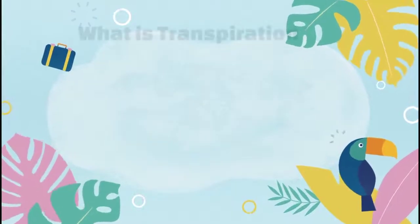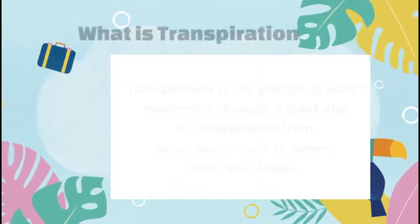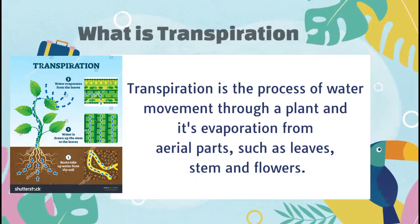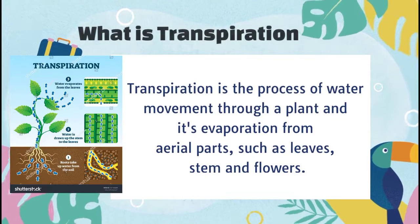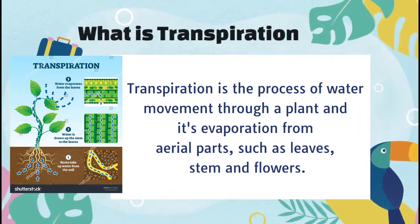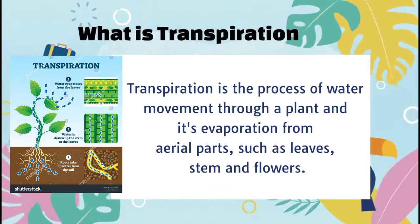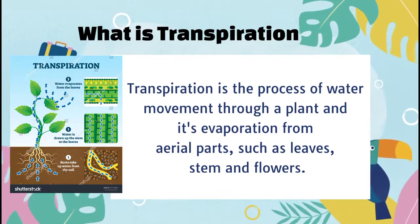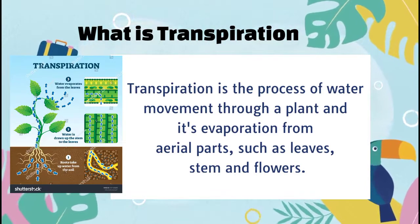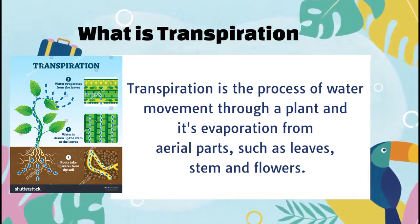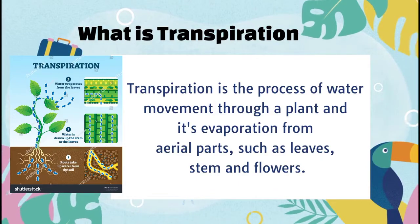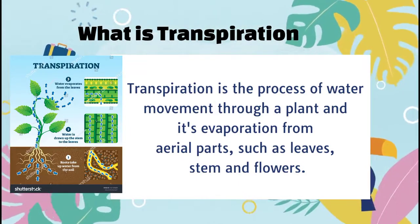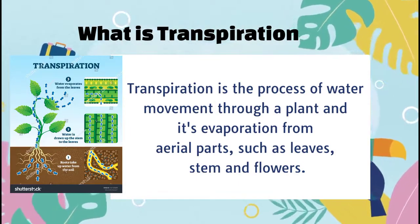What is transpiration? Transpiration is the process of water movement through a plant and its evaporation from aerial parts such as leaves, stem, and flowers. Water is necessary for plants, but only a small amount of water taken up by the roots is used for growth and metabolism.